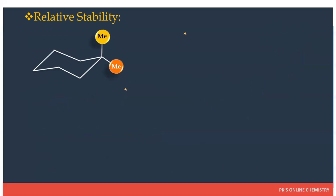Now regarding the relative stability or relative energy of 1,1-dimethylcyclohexane: there is one axial substituent and one equatorial substituent. The hydrogen atoms at C3 and C5 carbon atoms are relevant here. Whenever any substituent occupies an axial position, it will produce two butane gauche interactions or 1,3-diaxial interactions. The methyl group at the axial position interacts with hydrogen atoms at C3 and C5, and these two 1,3-diaxial interactions increase the energy of the molecule by 1.8 kcal/mol — 0.9 kcal/mol per each interaction.